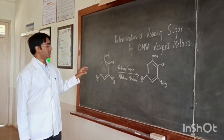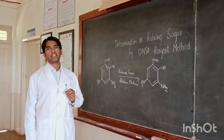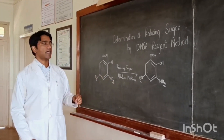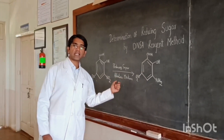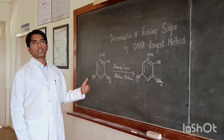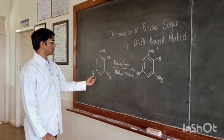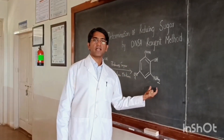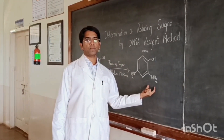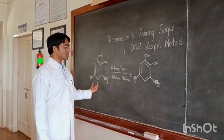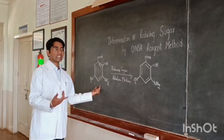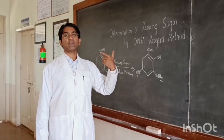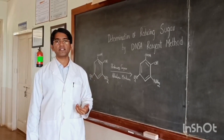When the sample containing the reducing sugar is taken and the dNSA reagent is added, the reaction is carried out in an alkaline medium. There occurs the reduction of the third position nitro group, which results in the formation of an amine functional group at that place. During this conversion of 3,5-dinitrosalicylic acid into 3-amino-5-nitrosalicylic acid, there is a development of a deep red color.